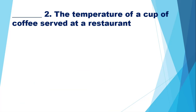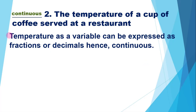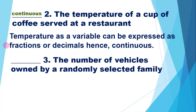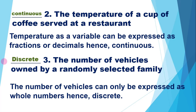For number 2, the temperature of a cup of coffee served at a restaurant — temperature can be measured with a thermometer, which is a unit of measurement, so it is continuous. Temperature as a variable can be expressed as fractions or decimals, hence continuous. For number 3, the number of vehicles owned by a randomly selected family — we cannot say a family owns 4.5 cars, so the number of vehicles can only be expressed as whole numbers. Hence, discrete.